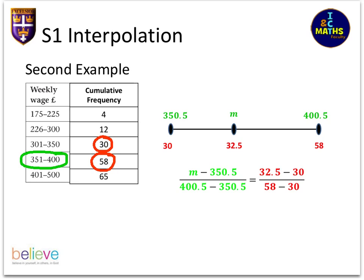So I've just arranged it so that on my diagram, M is also on the top. So again, it's a comparison of this length, which is M, take away 350.5, compared to the whole length.